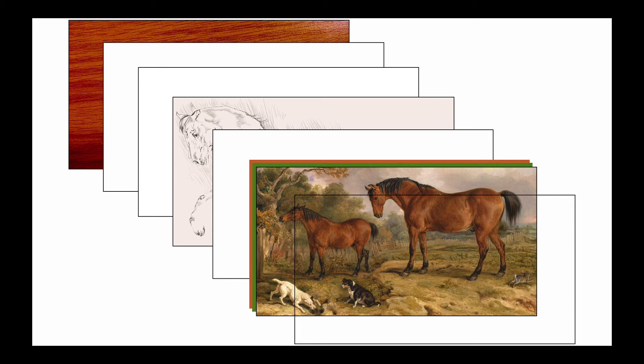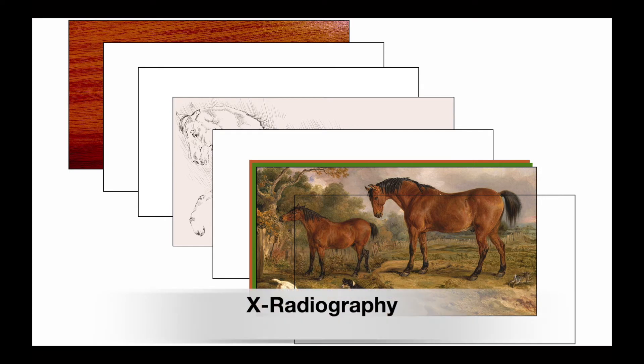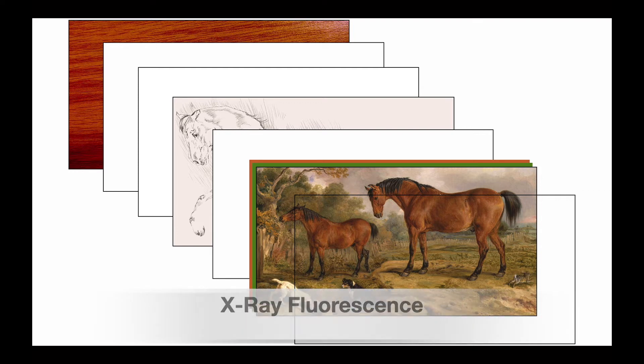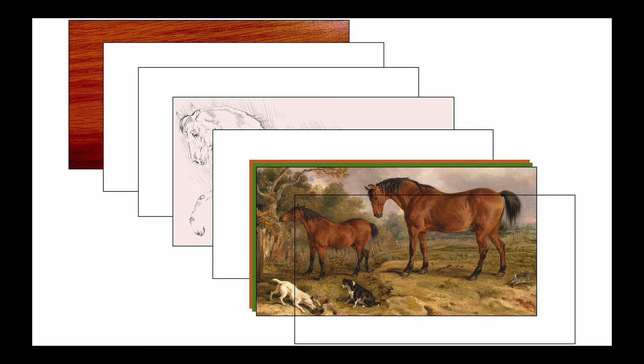Now that we've explored the different painting layers, let's see which scientific methods we can use to study each of them. X-rays can penetrate all the layers of the painting. Two non-invasive uses of x-rays are x-ray radiography and x-ray fluorescence. X-ray radiography can reveal the different elements of a painting from canvas all the way to the top paint layer. XRF can reveal the elemental composition of the paint layers and thus reveal the types of pigments used by the artist.